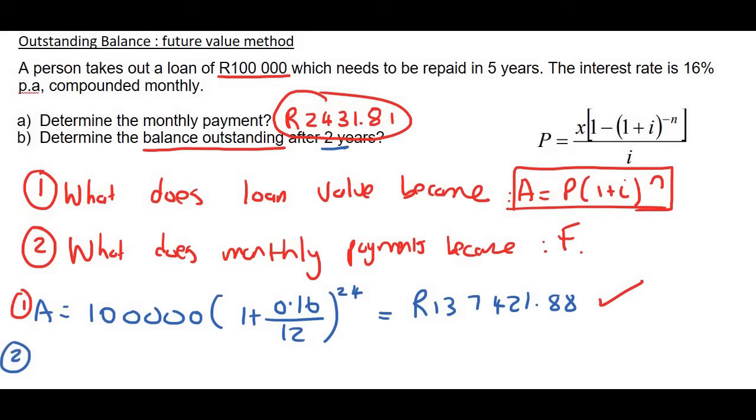Now, number two, we have been good citizens and we have been making our monthly payments. And so let's see what those would become. A lot of students say to me, Kevin, can't we just multiply this by 24? No, we don't do that. So the reason is, is when you pay money back to the bank, the interest or the bank sort of rewards you. And it's a whole complicated thing, actually. All I want you to know is that you don't want to say 2431.81 times 24. It's better than that.